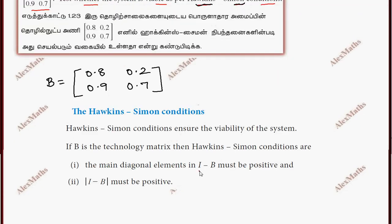We will check the condition of I minus B. This is the first condition. This is the determinant value of I minus B. Now, I is the identity, so I equal to 1, 0, 0, 1.